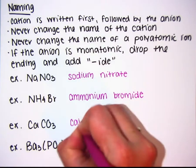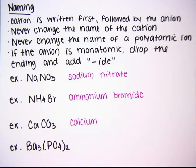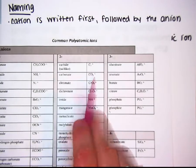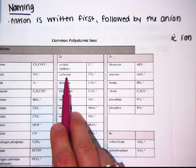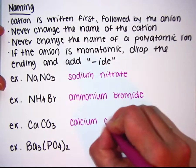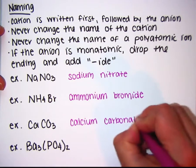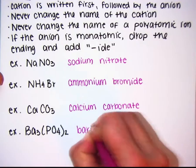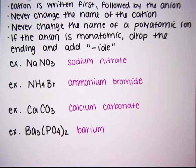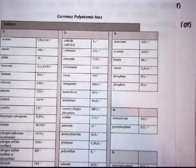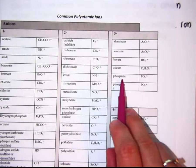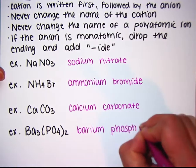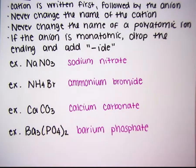Third example: Ca is calcium. We look up CO3 on our polyatomic ion reference sheet — CO3 is carbonate. Never change the name of the polyatomic ion; don't add or change any letters; copy it exactly as on the reference sheet. That gives us calcium carbonate. Last one: Ba is barium — cation comes first, never change the name of the cation. PO4 is phosphate — never change the name of the polyatomic ion. So this is barium phosphate.